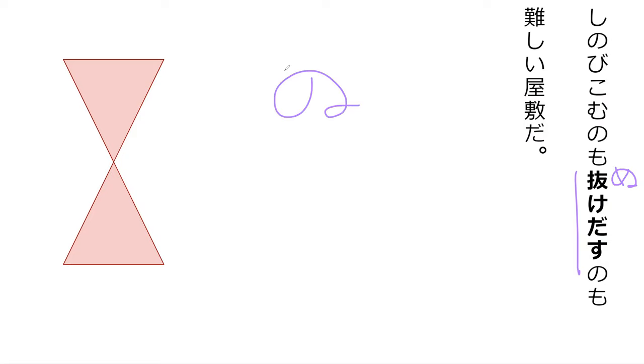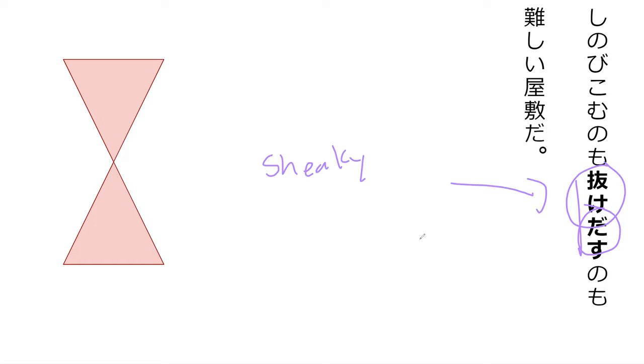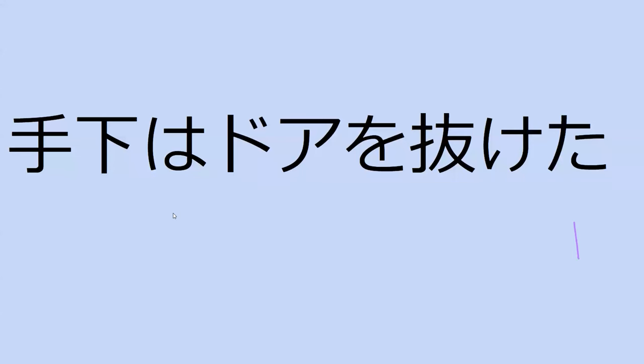Do you remember how this word was read? Good guess — that's a different word, tsukamu, to grab. This is nukedasu. Last time I didn't explain it correctly. Nukeru is to go through something. But dasu here adds a sneaky meaning — it's not common for dasu but that's what it's doing. So nukedasu means to sneak out without being identified, rather than just to go through.